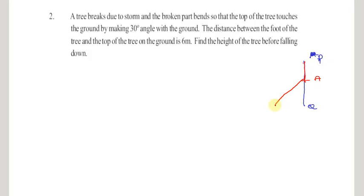PA is the broken part which fell down to the ground, and the top of the tree is 6 meters away from the foot of the tree — that means the PQ measurement we know is 6 meters. The top of the tree makes a 30-degree angle with the ground, so this angle is 30 degrees.